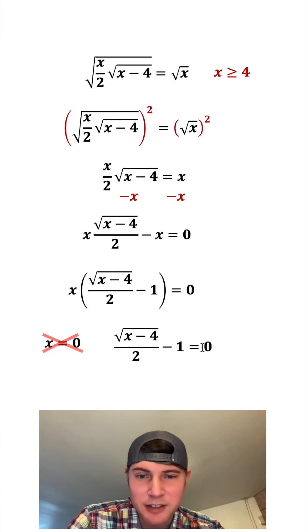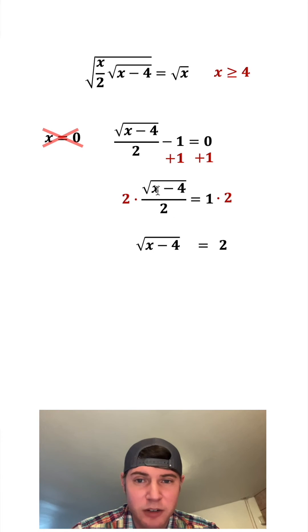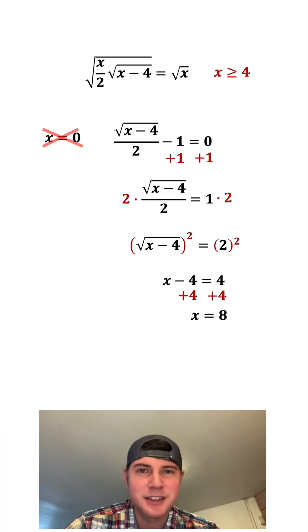So now all we gotta do is solve for x in this equation. I'm running out of room. Let's get rid of all this stuff and bring this up. We're gonna add one to both sides. Those cancel, leaving us with just this piece equals to zero plus one, which is one. And we'll multiply both sides by two. These twos are gonna cancel to give us just root x minus four, and then one times two is two. To get rid of the square root, we're gonna square both sides to give us x minus four, and two squared is equal to four. After we add four to both sides, we get x equals eight.